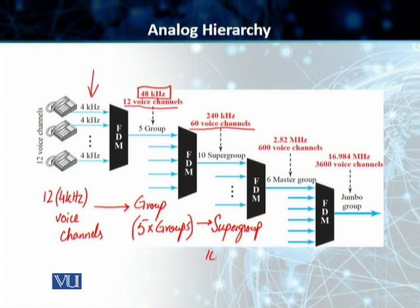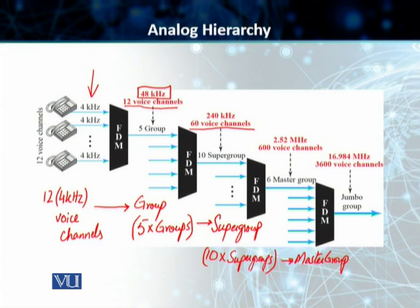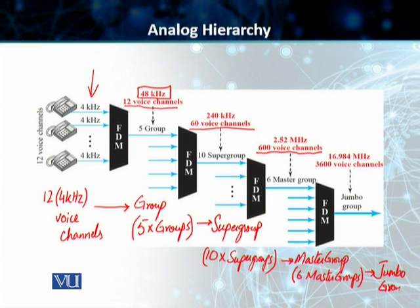These telephone companies normally combine 10 supergroups to form a master group. The bandwidth of a master group is 2.52 megahertz, and it can carry 600 voice channels. The last part of this analog hierarchy is that we combine 6 of these master groups to form a jumbo group. This jumbo group has got a bandwidth of 16.9 megahertz, and it can carry 3,600 voice channels. This is the analog hierarchy which telephone companies use today to carry the analog voice channels using frequency division multiplexing.